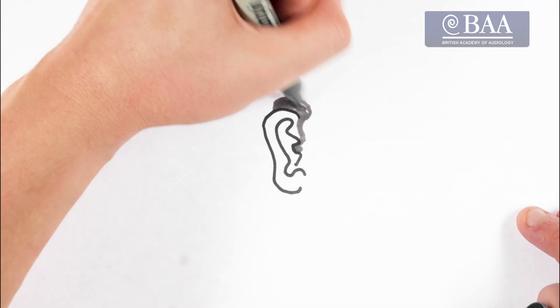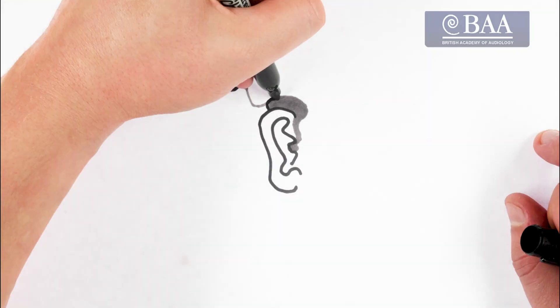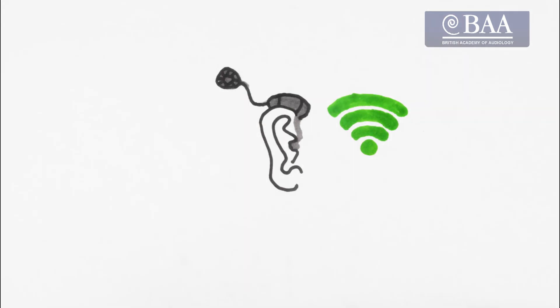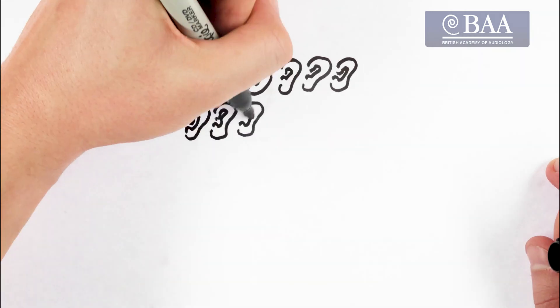A cochlear implant bypasses the damaged hair cells and stimulates the hearing nerve directly, so the signal sent to the brain is stronger, clearer and more meaningful. Despite the benefits of cochlear implants,